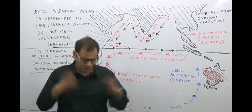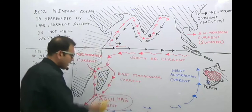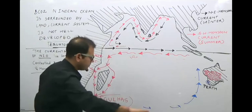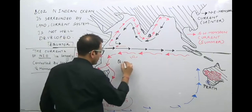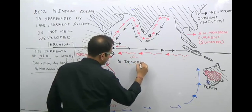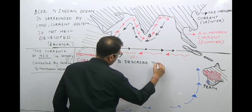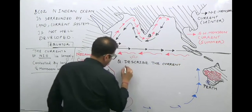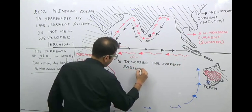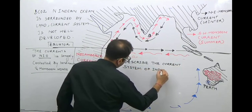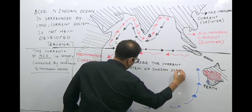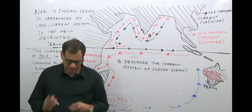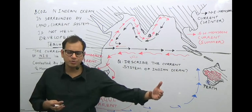If the question or assignment asks you to describe the current system of the Indian Ocean, use this as a guide. To write about the current system of the Indian Ocean, first write about what an ocean current is — a definite directional movement of ocean water.